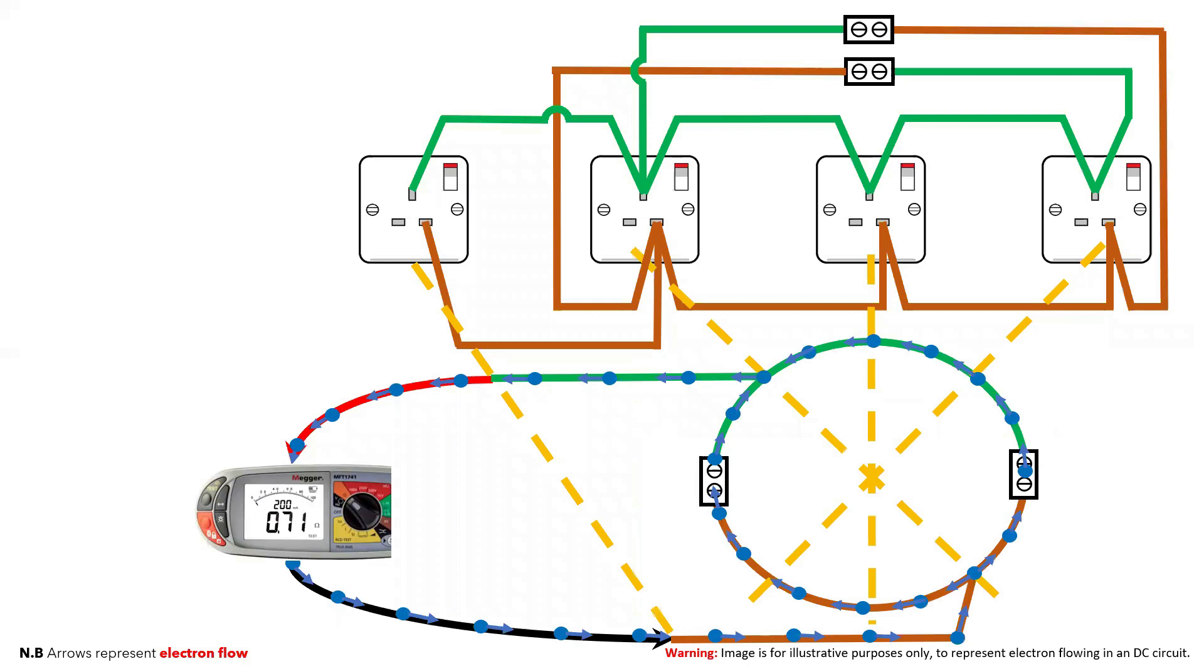If you have a spur, you will get a higher reading as the electrons now have that extra road to travel down before joining the ring. This higher reading is your prompt to take the socket front off and check that it is indeed a spur.